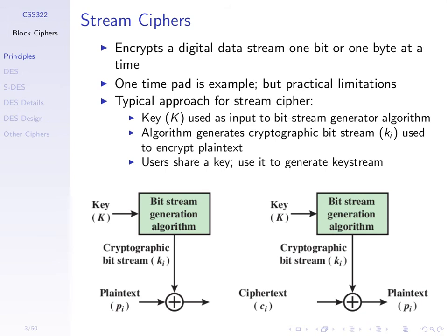The difference between stream and block ciphers is primarily about the size of information we encrypt at a time. In both cases, when we encrypt, we take our plaintext and split it into chunks, encrypting a chunk at a time — not all at once. We take a sequence of bits, encrypt that, then the next sequence of bits and encrypt that. The difference is really the length of that sequence of bits or bytes that we encrypt at a time.